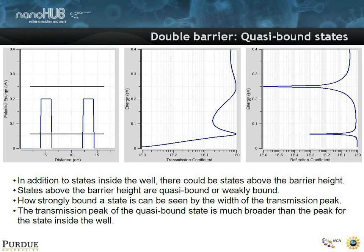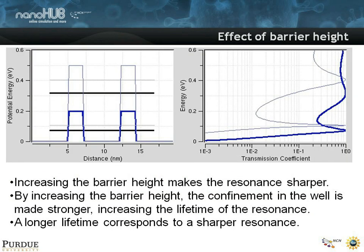How strongly a state can be seen is evidenced by the width of this transmission peak. If it's very broad, it's relatively weakly bound. To drive this home further, we modulate the barrier height using a tool called PCPBT on the NanoHub — the Piecewise Constant Potential Barrier Tool. Comparing the short barrier case in deep solid lines, when we make the barrier taller, we get another transmission coefficient. We notice that with a taller barrier, this resonance becomes a little sharper, and it moves up in energy a little bit.